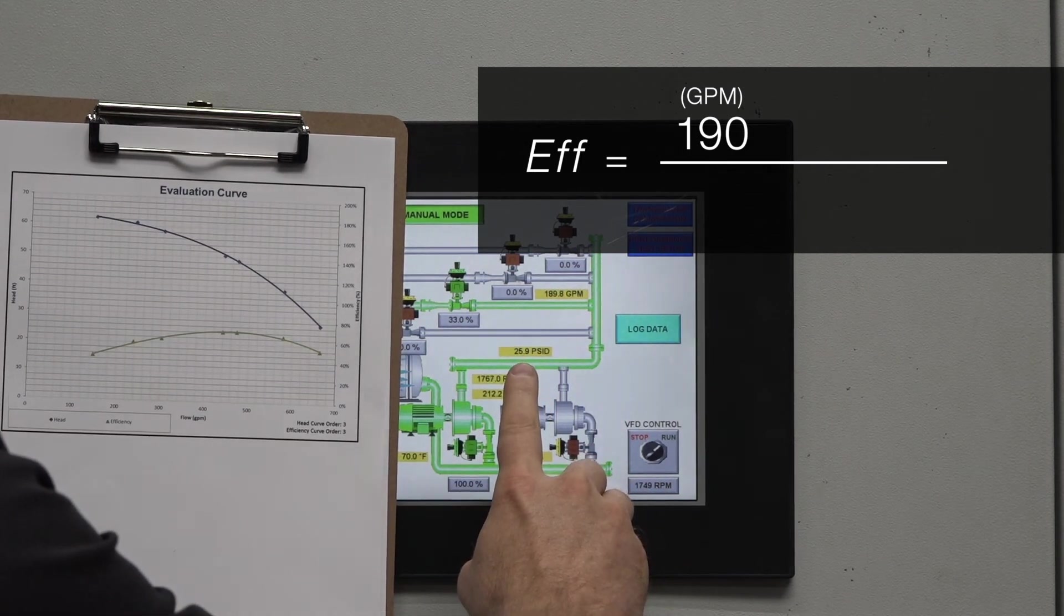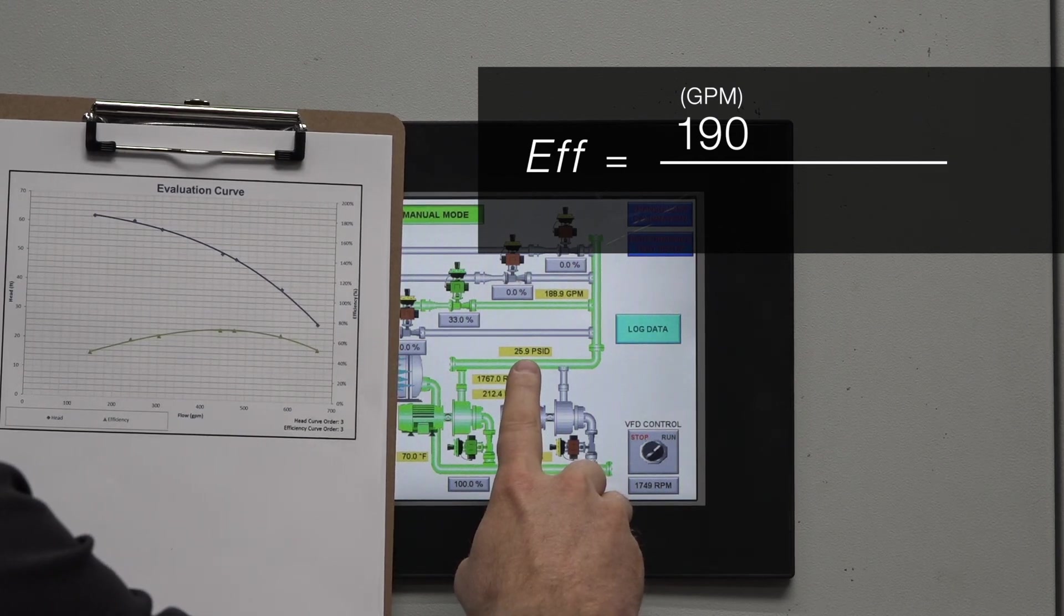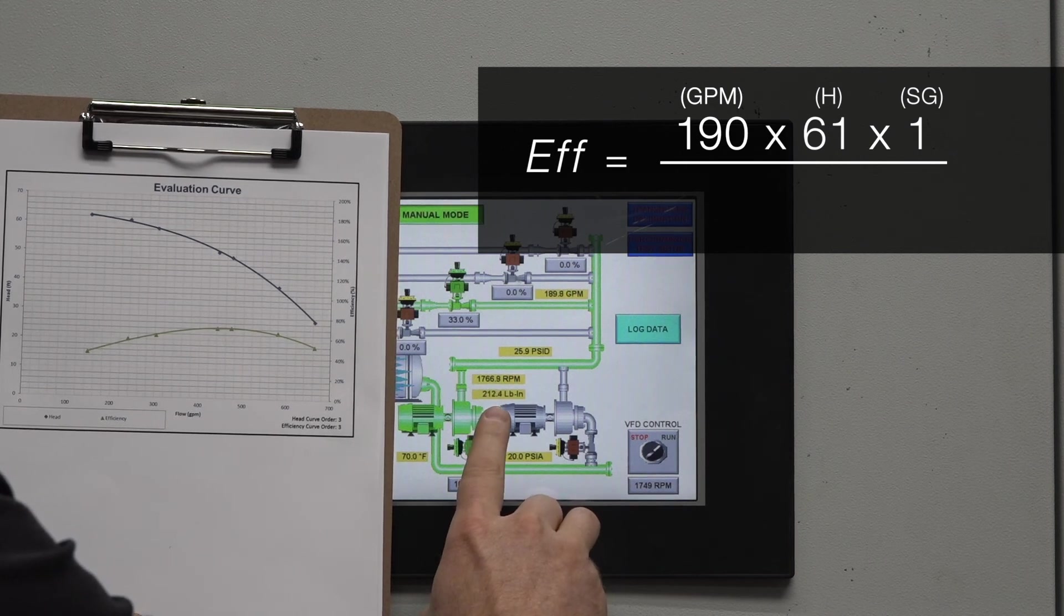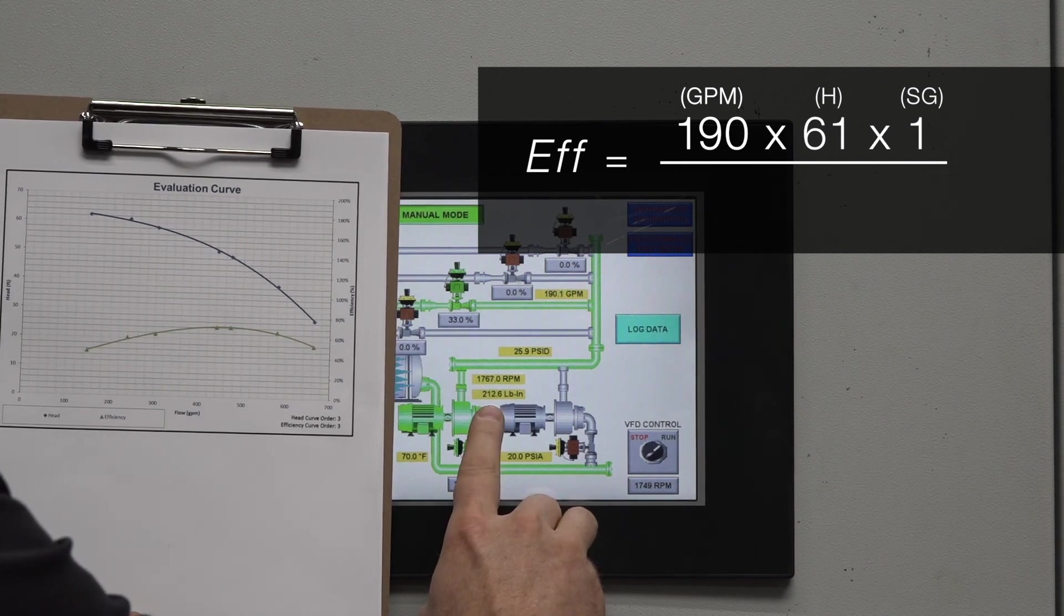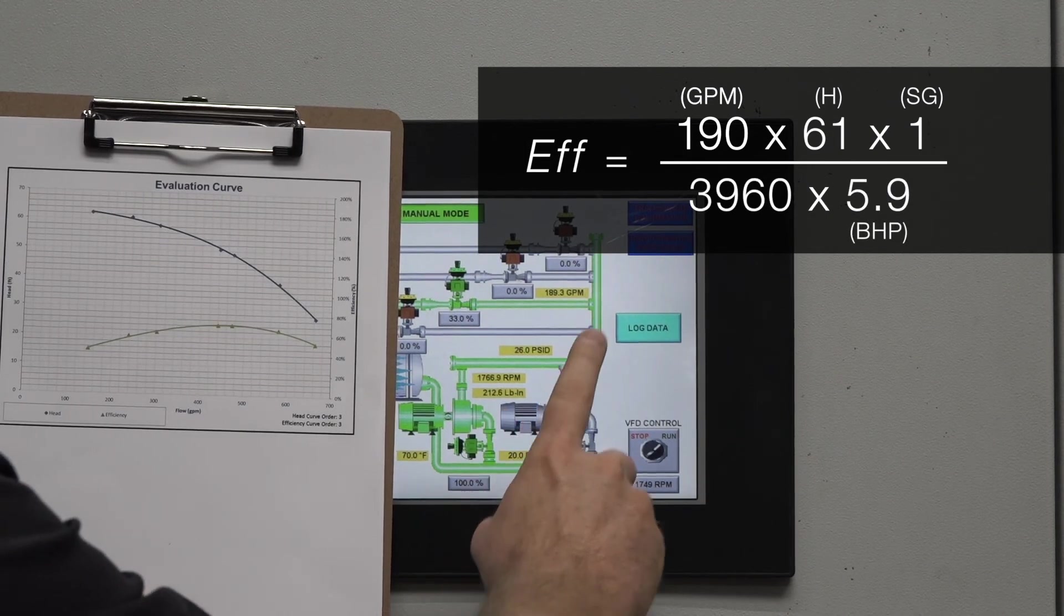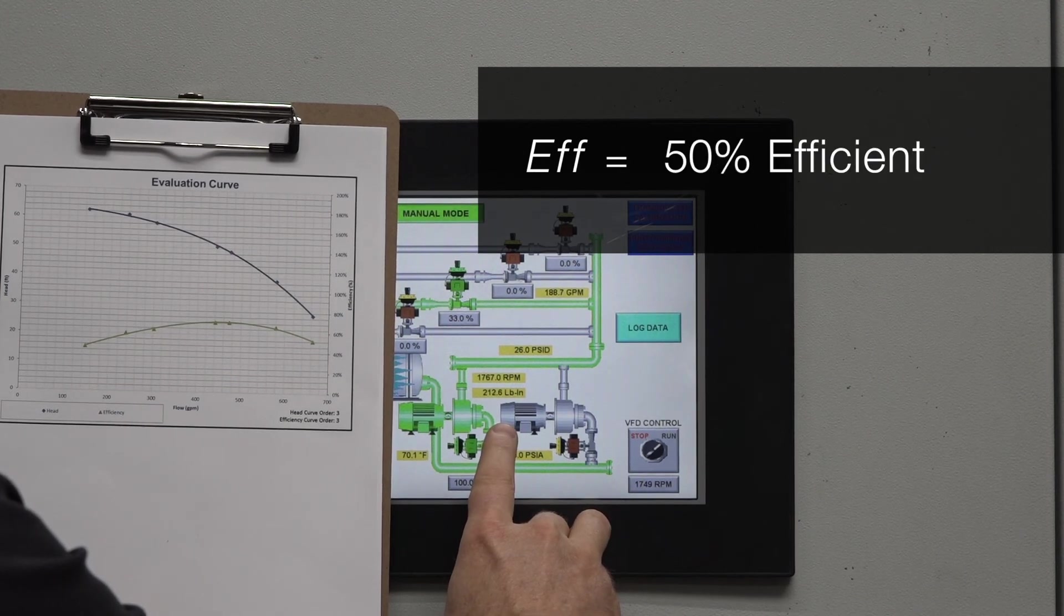We're now operating at around 26 psi differential which is close to 61 feet of head and our power consumption is calculated at around 5.9 horsepower. Using this data our efficiency is now about 50 percent efficient.